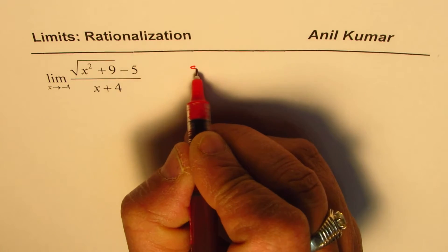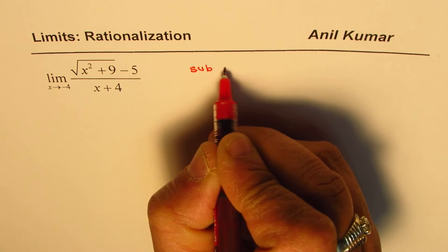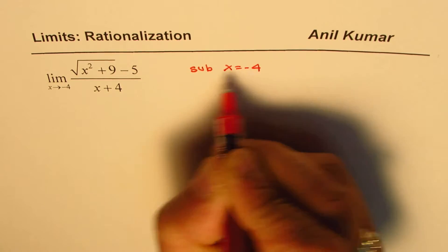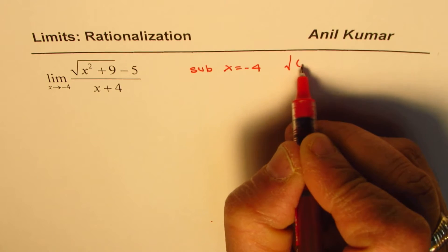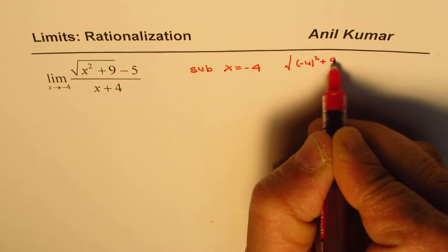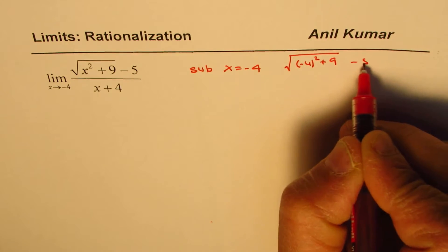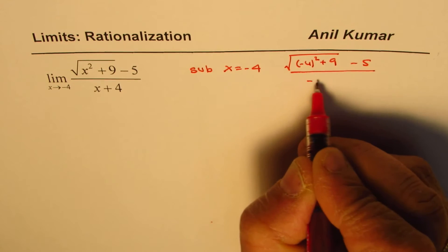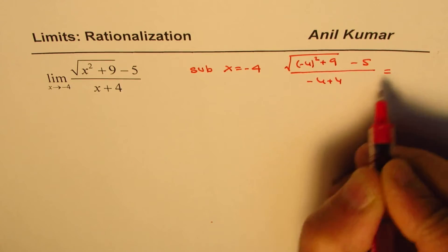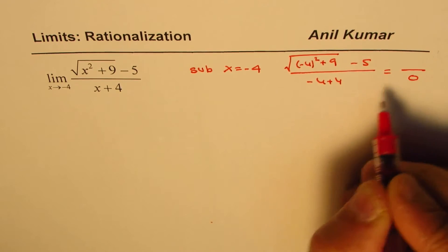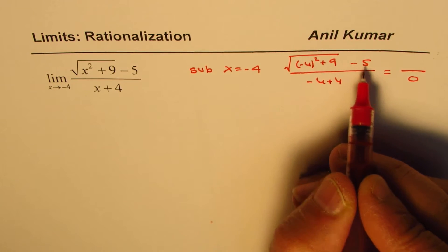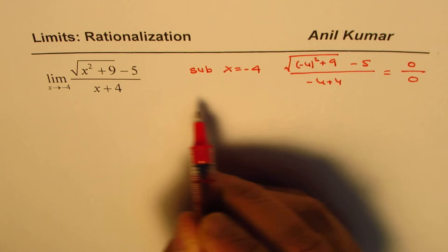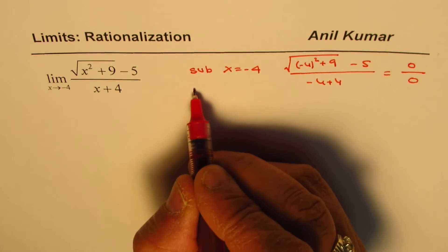Now if I substitute minus 4, what happens? Substituting x equals minus 4, I get square root of (-4)² plus 9 minus 5, over -4 plus 4. The denominator is clearly 0. The numerator is √25 minus 5, which is 5 minus 5 equals 0. So we get an indeterminate form, 0 over 0.